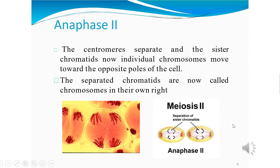In anaphase 2, it begins with the simultaneous splitting of the centromere of each chromosome, which was holding the sister chromatids together, allowing them to move towards opposite poles of the cell. At this stage, sister chromatids get separated and start moving towards the opposite poles.